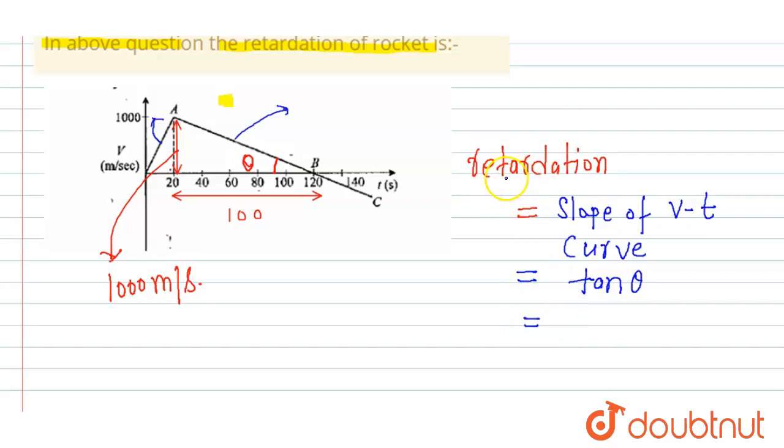So retardation means negative sign is included. So now tan theta in this triangle will be perpendicular upon base, that is this 1000 meter per second upon 100 second, that is 1000 meter per second divided by 100 second.